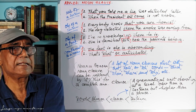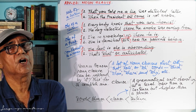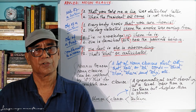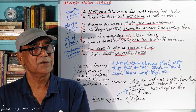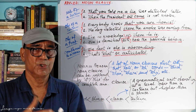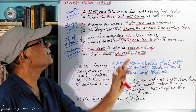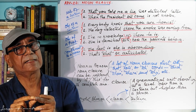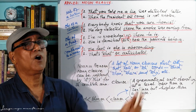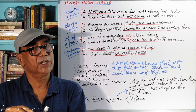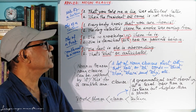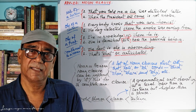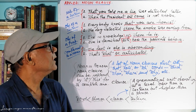Now, the next point: object of a sentence. "Everybody knows that you are honest." What does everybody know? Everybody knows something — everybody knows your character. And what is your character? That you are honest. So everybody knows your character; your character is equal to "that you are honest." Your character is the object, and here "that you are honest" is the object part.